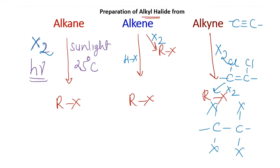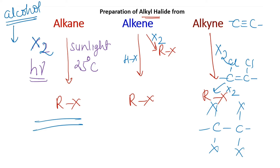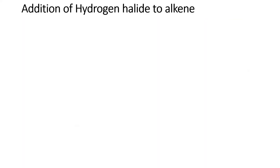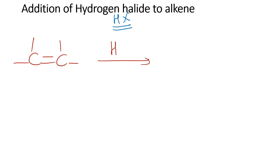So from the first method — preparation of RX from alkane — we have completed that. We previously did preparation of RX from alcohol, then from alkane. Now from alkene, this method we are doing: addition of HX (hydrogen halide) to alkene.